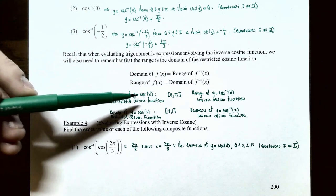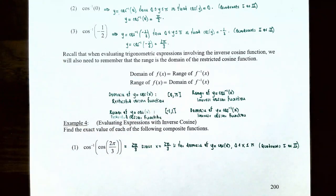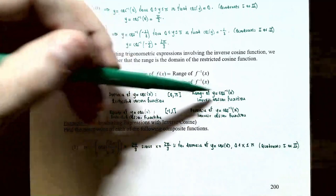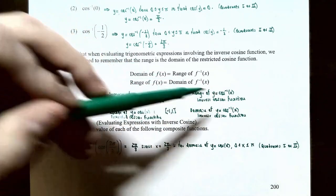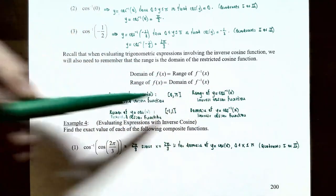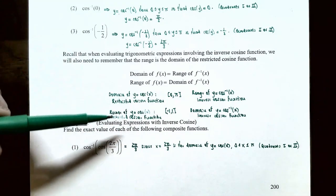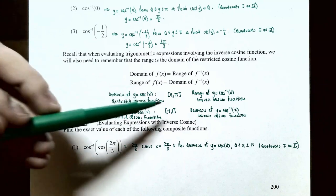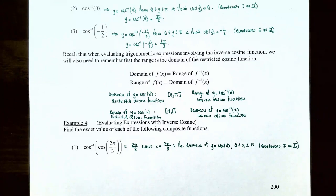So the domain of y = cos(x) on the restricted domain [0, π] is the range of the inverse cosine function. And the range of the restricted cosine function — y values between −1 and 1 — becomes the domain of the inverse cosine function, y = arccos(x).